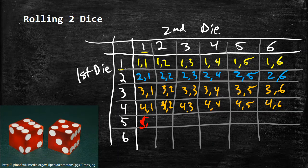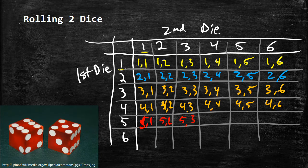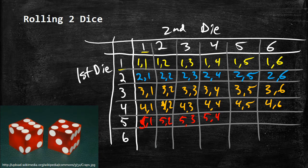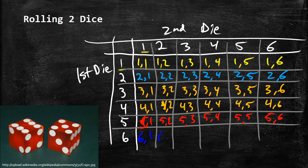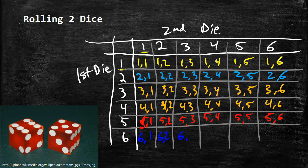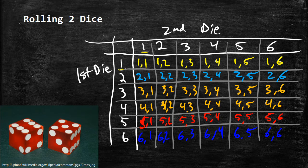That should be a five. 5,1, 5,2, 5,3. Feel free to fast forward through this if you want to get through this a little bit quicker. 5,5, 5,6, and then at the bottom we've got 6,1, 6,2, 6,3, 6,4, 6,5, and 6,6.